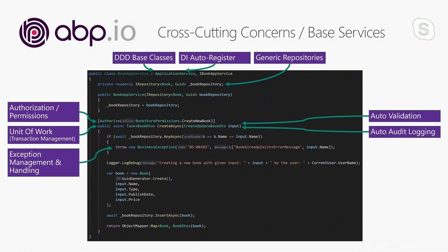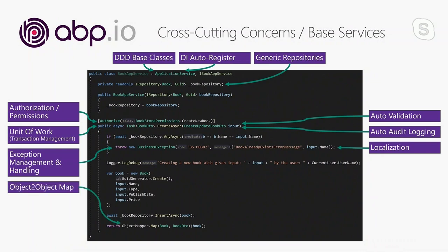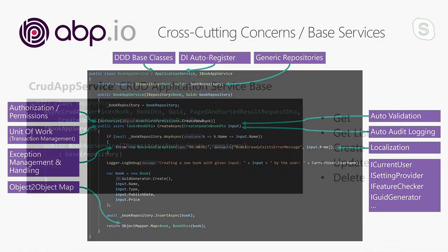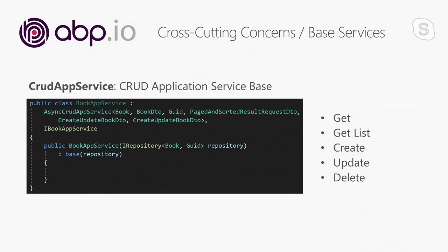The audit log system is very detailed and configurable — it can also save entity and property changes. You never handle exceptions manually; ABP handles all exceptions and sends an appropriate result to the client. ABP extends ASP.NET Core's localization system to make it more dynamic and extensible. An object mapper is used to map objects — it has AutoMapper integration out of the box and can be replaced by another mapper. In this way, you only write code related to your business without repeating yourself. If your application service basically performs CRUD operations, you can inherit from CrudAppService to get it fully implemented for you, then override and customize any method you need.